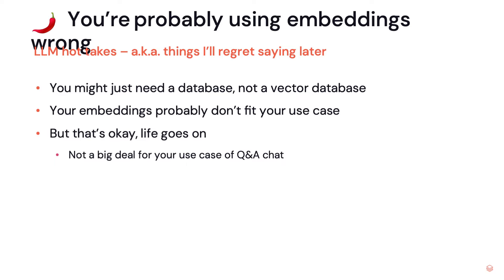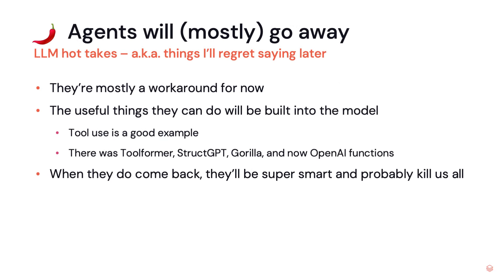You're probably using embeddings wrong — spicy hot take. You might just need a database and not a vector database, and your embeddings might not be optimal for your use case. It's usually not a huge deal, but if you get deep into this world there are probably a lot of things you can do to optimize. Probably the most controversial: agents will mostly go away. They can do a lot of useful things, but when something is useful and repeatable enough, it'll just get baked into the model. Tool use is a good example — you had Toolformer, StructGPT, Gorilla, all teaching the model to use tools, and now there's OpenAI's functions capability.